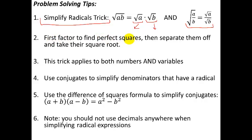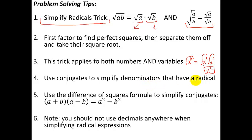The first thing you do is factor out perfect squares, then break them apart, and then take the square root of any pieces that are perfect squares. If there are any pieces that are not perfect squares, you have to leave them inside the radical. You can use this trick on both numbers and variables. For example, the square root of x to the fourth is x squared times x squared, which is just x squared. Use conjugates to simplify any denominators that have a radical, and use a difference of squares to simplify conjugates. You should always use this shortcut — you don't need to foil it out because the inners and outers cancel. And you shouldn't be using any decimals anywhere; the whole point is to simplify completely without a calculator.